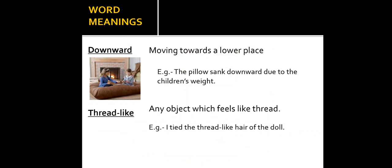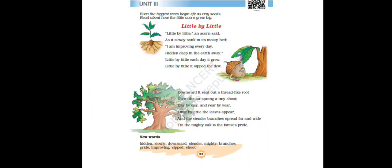So two new words are here in this line. First is downward. Downward means moving towards a lower place. Look at the picture here. The girls are playing, sitting on a giant pillow, and the pillow has moved lower than its original position. So we can say that the pillow sank downward due to their weight. Now the second word is thread-like. It means any object which feels like thread. Here the root of the oak tree feels like a thread.